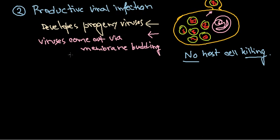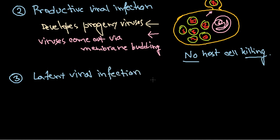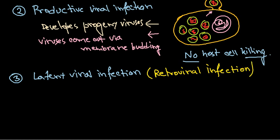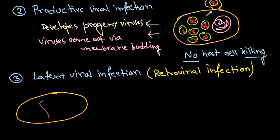The third kind of fate of viral infection is latent viral infection. This type is pretty common for retroviral infection. In this latent kind, after the virus enters the host cell, the host cell genome is present and the virus particle with its own nucleic acid material enters.